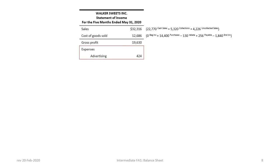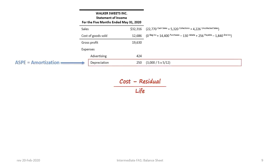Now we will list the operating expenses for WSI, beginning with advertising of $424, which is a given number. Next we have depreciation, which has to be calculated. Note that under ASPE the term depreciation would be replaced with amortization. To calculate depreciation on a straight-line basis we use the formula: cost minus residual divided by the useful life of the asset. The cost of the asset is $3,000, with zero residual value and an expected life of five years, giving a depreciation rate of $600 per year.